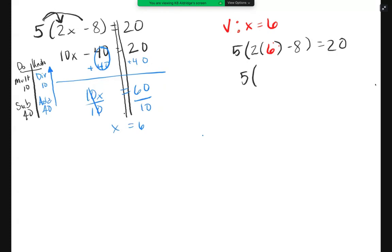5, 2 times 6 is 12 minus 8. 5 times 12 minus 8 is 4. Hey, we did it. 20 equals 20 is true.